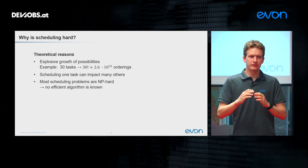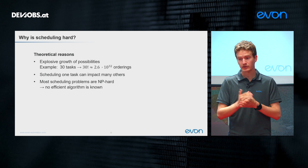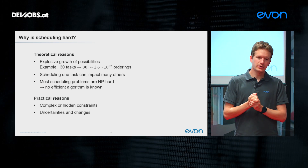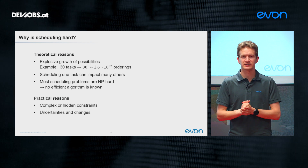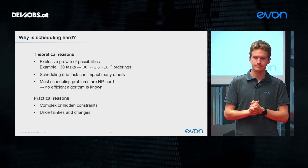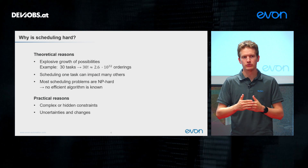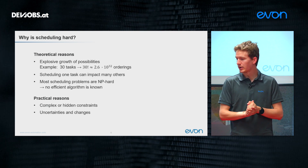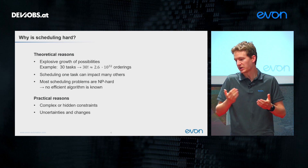Even in theory, scheduling is a hard problem, and on top of that there are practical reasons that make it even harder. One is that constraints can be complex or hidden. In our manufacturing example, maybe the machines tend to overheat if used for too long, but this might not be known before we start optimization — because previously we only had bad schedules where machines weren't used for long consecutive periods. We may only discover this constraint after optimization, making things much more difficult.